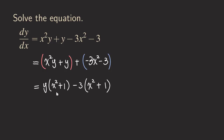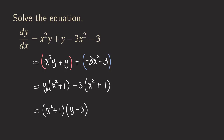As you can see here, there are two terms now. For the two terms, they both have the same factor x squared plus one. So we can now do one more factoring — factor out the x squared plus one — and we are getting x squared plus one times y minus three. The first term gives us the y, and the second term gives us the negative three.